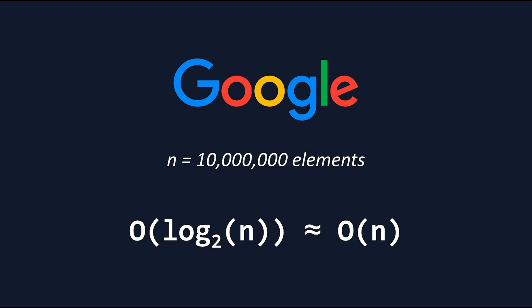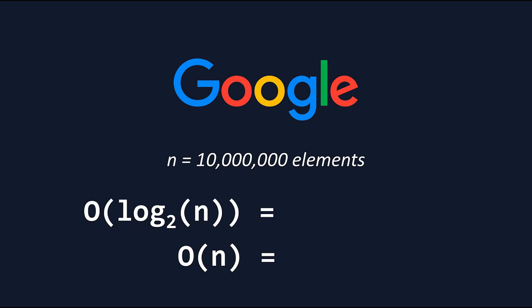Now there is a big difference. With the same algorithms, O(log₂(n)) comes out to 23.3 milliseconds, whereas O(n) comes out to 10 million milliseconds, which amounts to 2 hours and 47 minutes.